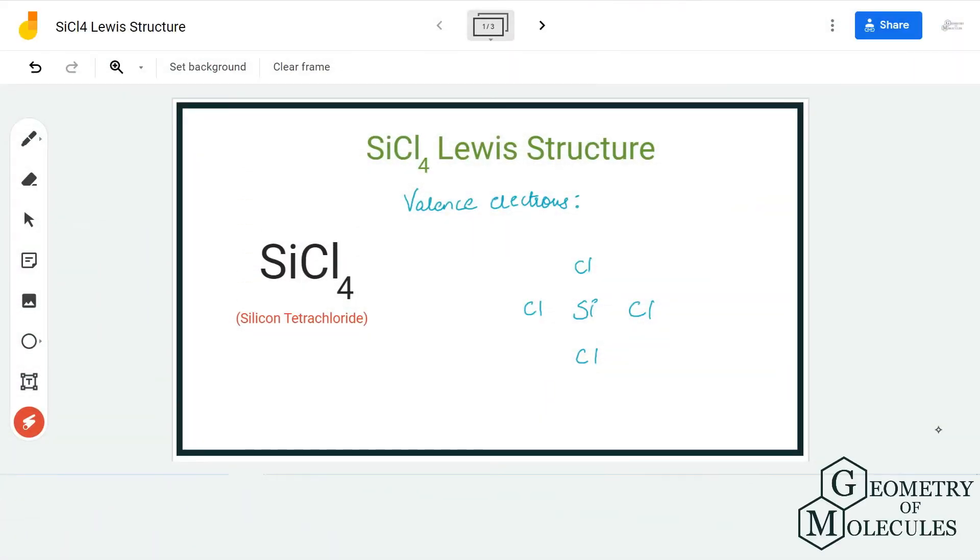Hi guys, welcome back to our channel and in today's video we are going to help you determine the Lewis structure for silicon tetrachloride, the chemical name for SiCl₄. To determine its Lewis structure we are first going to look at the total number of valence electrons for this molecule.